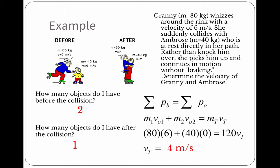...who is at rest directly in her path. Rather than knock him over, she picks him up and continues in motion without breaking. Granny is not going to slow down. Determine the velocity of Granny and Ambrose after she picks him up. Again, the mass times the velocity of Granny, plus the mass times the velocity of Ambrose, should equal the total mass of them together times the total velocity. In this case, would be 4 meters per second.